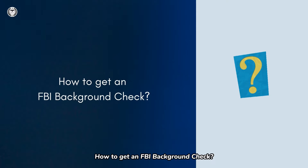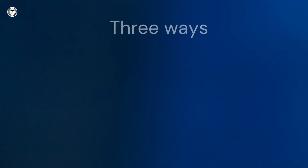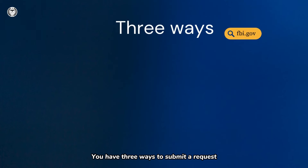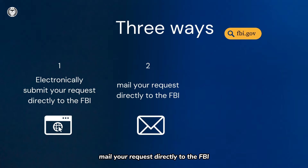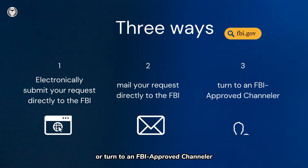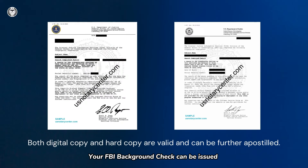How to get an FBI Background Check? You have three ways to submit a request: electronically submit your request directly to the FBI, mail your request directly to the FBI, or turn to an FBI-approved channeler. Your FBI Background Check can be issued in a digital copy, PDF format, or a hard copy.